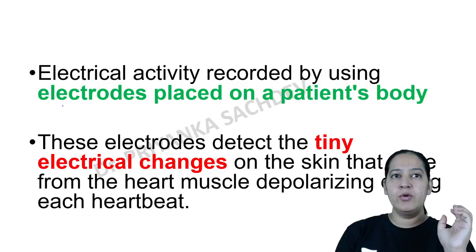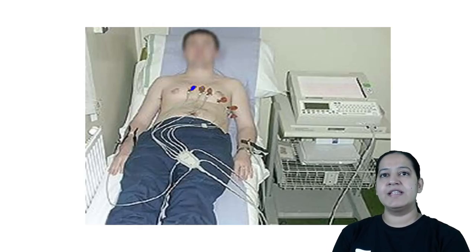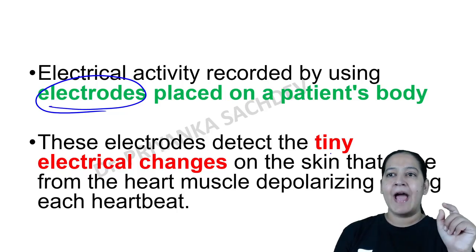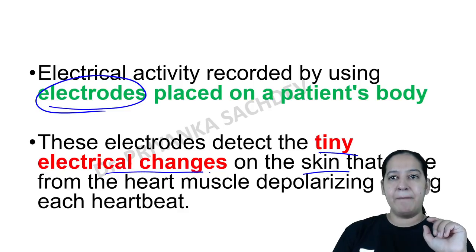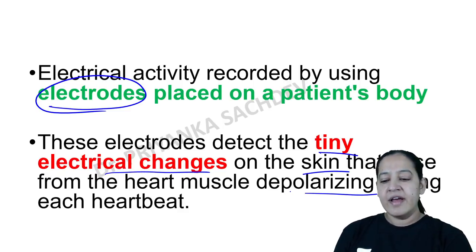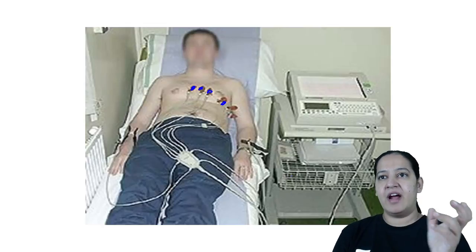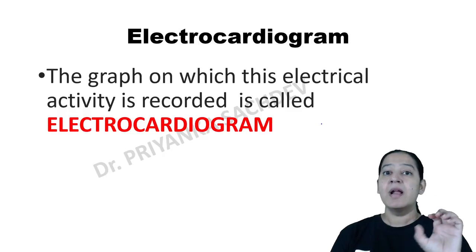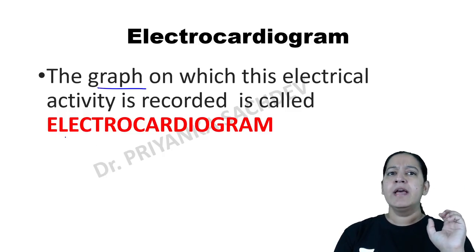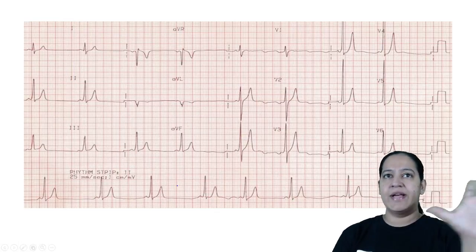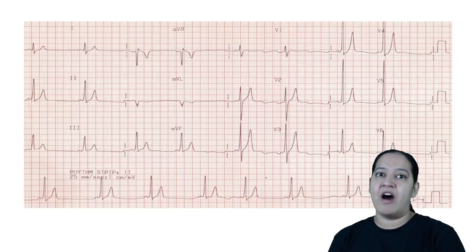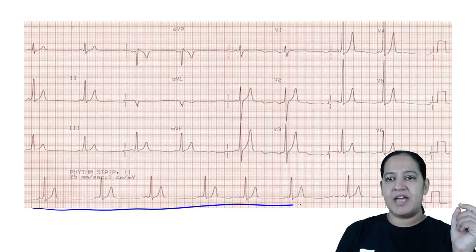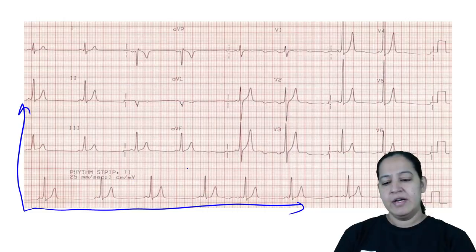Electrical activity is recorded by using electrodes placed on the patient's body. These electrodes are placed on the skin with the help of jelly. The tiny electrical signals are picked up during depolarization of the heart — electric changes are picked up and drawn on the graph paper. The graph paper used is known as the electrocardiograph paper. It has an x-axis on which time is plotted and a y-axis on which voltage is plotted.